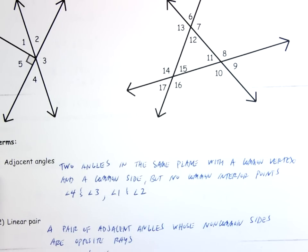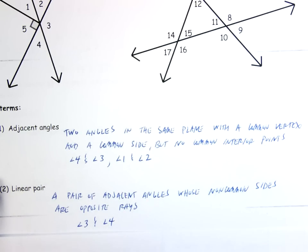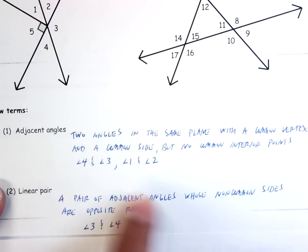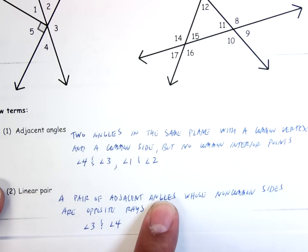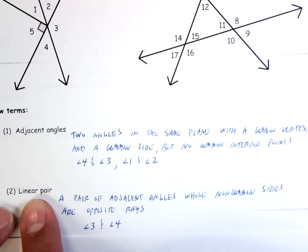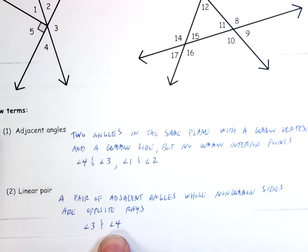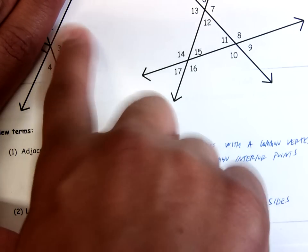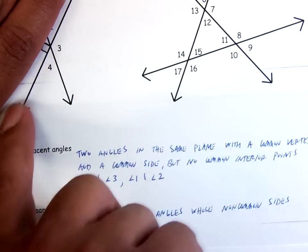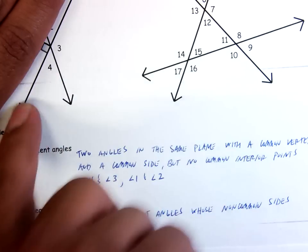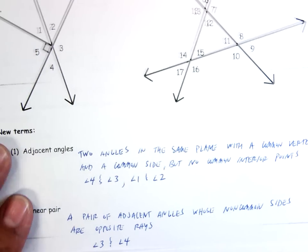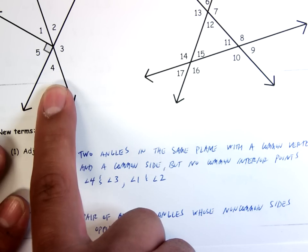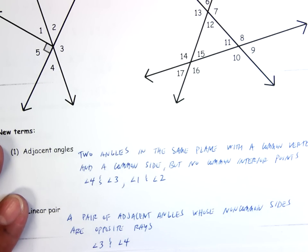What does it mean to be a linear pair? A linear pair is a pair of adjacent angles whose non-common sides are opposite rays. Linear pairs: two angles that touch, they share a ray, and they make a straight line. Angle three and angle four — this is a linear pair. Their non-adjacent sides are opposite rays; they make a straight line. So if I add up angle three and angle four, it's got to be 180 degrees.